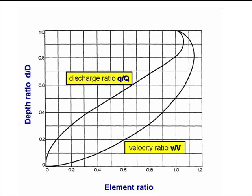And this chart shows how the ratios Q/Q and v/V vary with the depth ratio, or the proportional depth of flow, d/D, as it varies from 0 to 1.